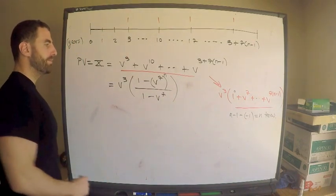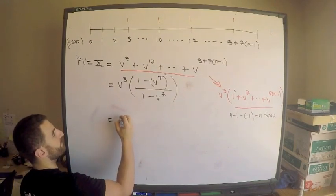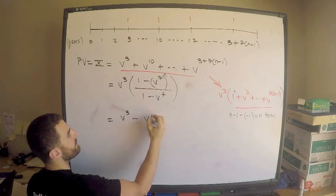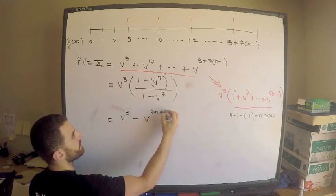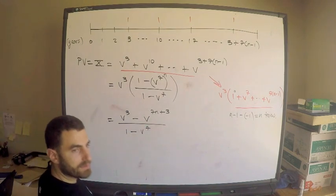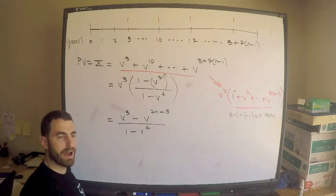That's how you find this power for a finite geometric sum. You need to figure out how many terms you're summing divided by one minus the common ratio. So this is what we have. This is equal to the following: this is v cubed minus v to the 7n plus 3 divided by one minus v to the seven.